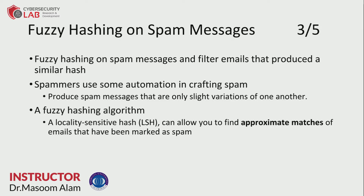Let's take a look at how fuzzy hashing works on spam messages. It performs fuzzy hashing on the messages and filters the emails that produce a similar hash. The primary assumption behind this kind of fuzzy hashing is that spammers use some automation in their crafting system, so whenever they are creating spam messages, those messages are a slight variation of the previous one.